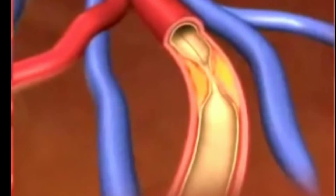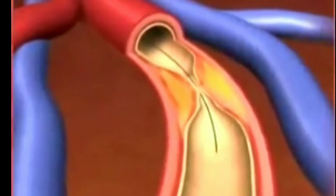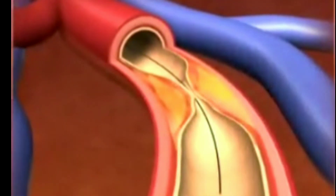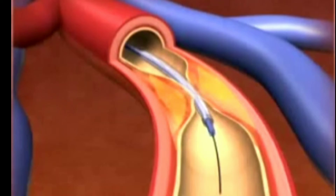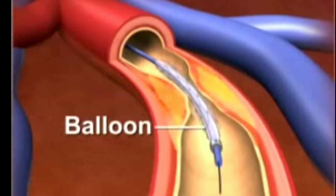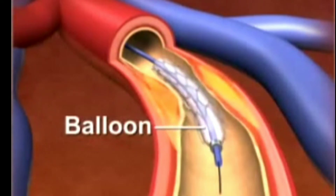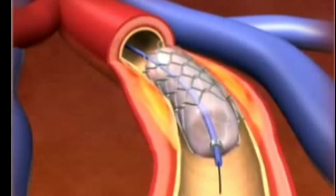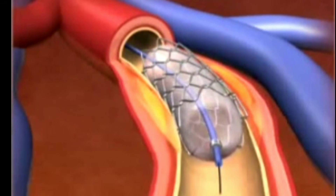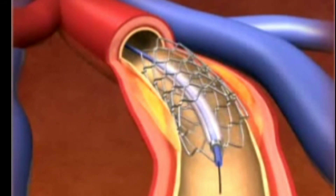A thin, flexible metal wire is then advanced through this tube and past the site of blockage in the artery. A second, smaller catheter is then inserted over the wire and threaded to the same artery. When it reaches the narrowed area, a small balloon on its tip is inflated to reopen the artery and flatten the blockage into the artery wall, while at the same time stretching the artery open to increase blood flow to the heart.